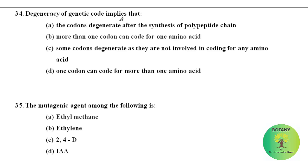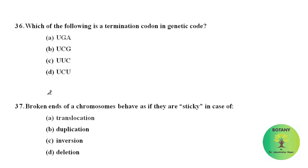Degeneracy of the genetic code implies that more than one codon can code for one amino acid. The mutagenic agent among the following is ethyl methane sulfonate. Which of the following is a termination codon in the genetic code? UGA is the termination codon in the genetic code.